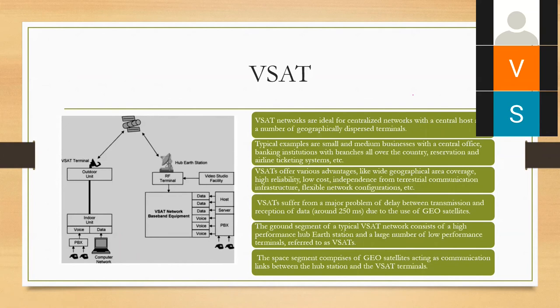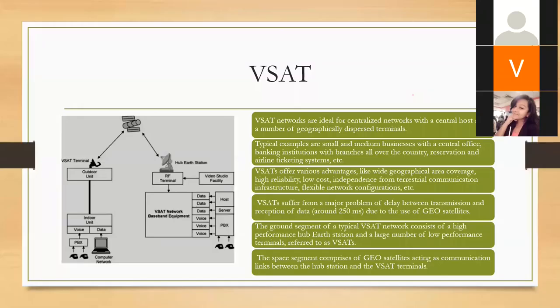VSAT — Very Small Aperture Terminal — is another key application. The transmitting earth station may have a large antenna while the receiving terminal at home is small. VSATs are used for direct broadcast, for two-way ATM communication, and for live news coverage where journalists broadcast directly from the field. The high frequency used helps reduce the physical size of these terminals. This concludes chapter one.